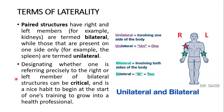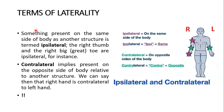Designating whether one is referring to the right or left member of bilateral structures can be critical and is a good habit to develop at the start of one's training. Something present on the same side of the body as another structure is termed ipsilateral — for instance, the right thumb and the right big toe are ipsilateral. Contralateral implies present on the opposite side of the body; for example, the right hand is contralateral to the left hand.